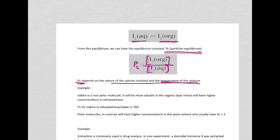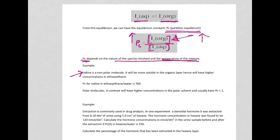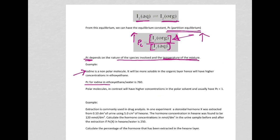For example, iodine is non-polar. Therefore, it's going to be more soluble in the organic layer. So therefore, concentration of iodine in the organic layer is going to be higher. Therefore, it will have a high value of PC. For example, PC for iodine in ethoxiethane in comparison to water is 760.